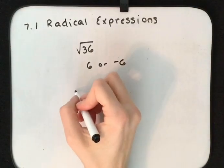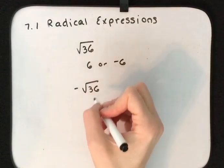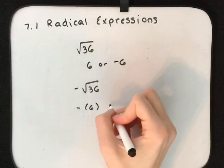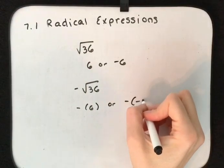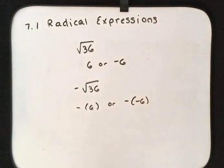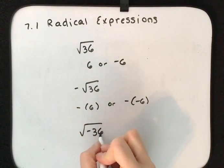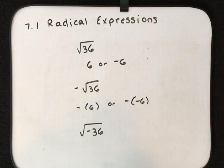If we look at the opposite of the square root of 36, that means it's either the opposite of 6 or the opposite of negative 6. If we look at the square root of negative 36, that one we can't do because there is nothing times itself that's going to give us negative 36.